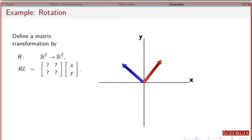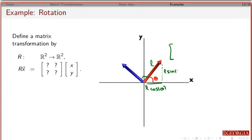For the next example, suppose I have a vector at angle theta from the x-axis, and I want to rotate it by a right angle. If this vector has some length l, then the x component is l cosine theta and the y component is l sine theta.